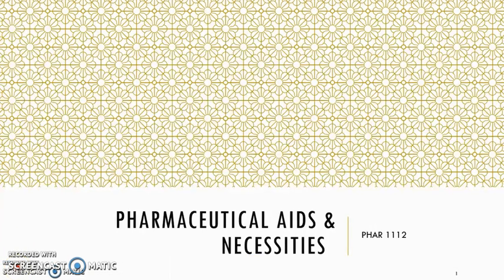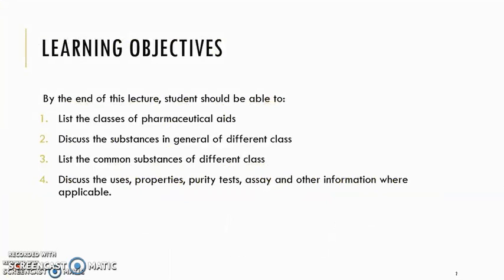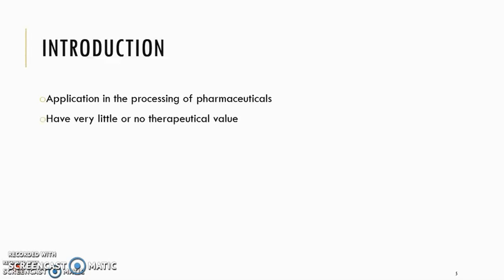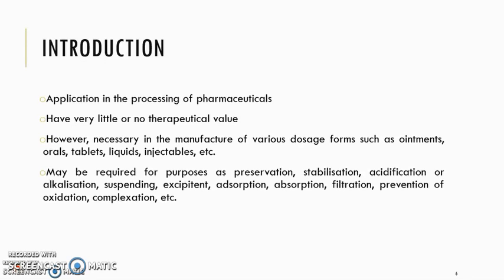Pharmaceutical Aids and Necessities. Shown are the learning objectives for this lecture. Pharmaceutical aids and necessities are usually used in the manufacturing of pharmaceuticals or drugs. Therefore, they should have little or no therapeutical value. These pharmaceutical aids and necessities are essential in making drugs into their dosage forms.